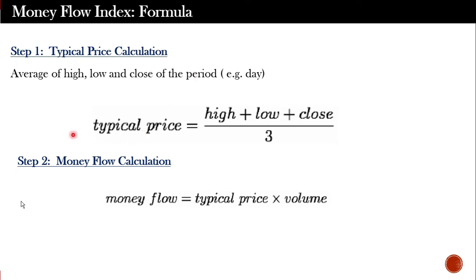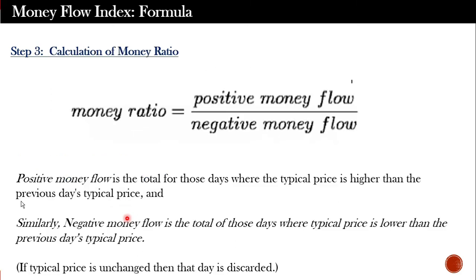The second step is calculation of money flow. What we are doing is: you take the typical price you calculated and multiply it with volume, and the value you get is called money flow. So the second step is money flow calculation, and the first step was typical price calculation.